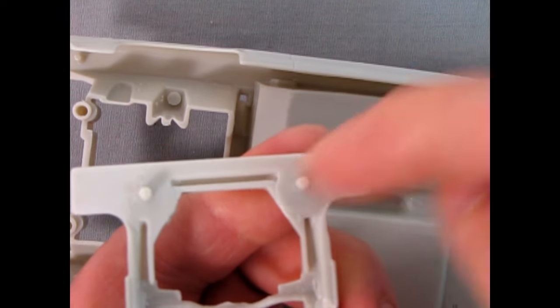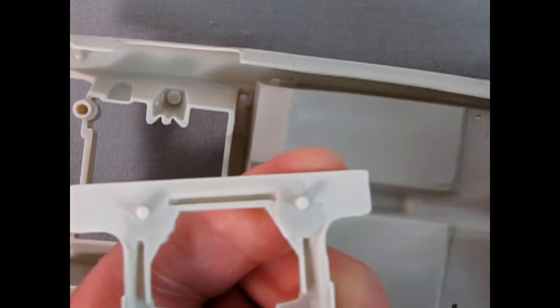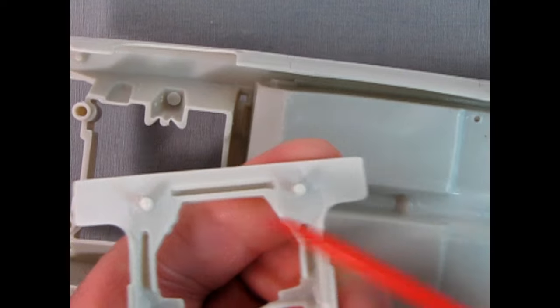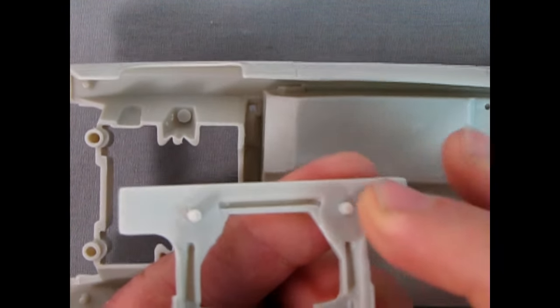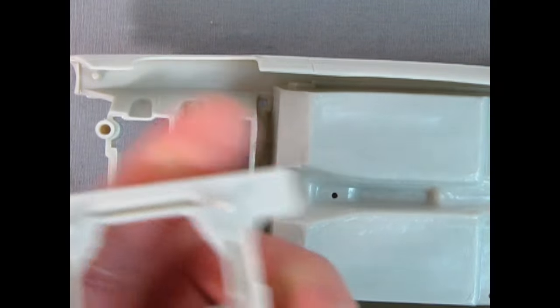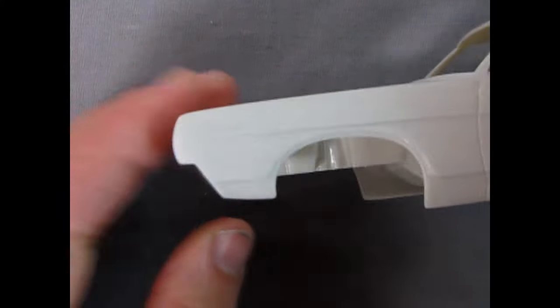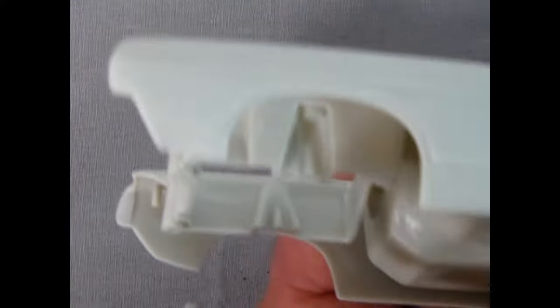So basically cut these off, sand this flat, which I'm not going to do in the video. Just give you a bit of an idea what's going on. So sand them flat and with that interior tub in place.